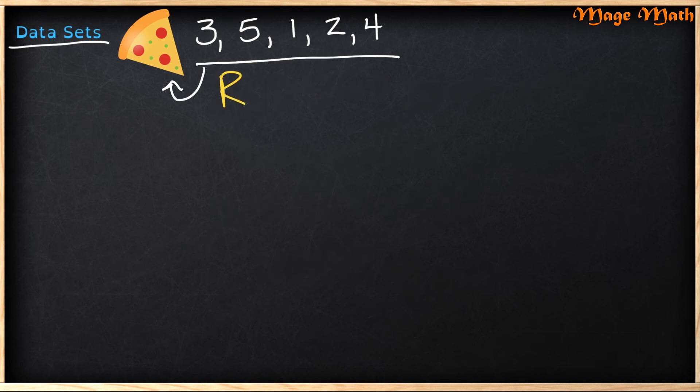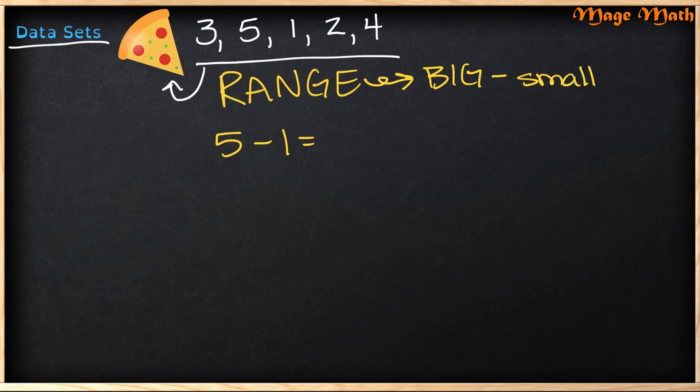The last thing we're going to learn about today is called the range. And this is just when we take the big number, or the biggest number, and we subtract it by the smallest number. So in this case, our largest number here is five, and our smallest number is one. And we know that five minus one equals four. So our range in this case is four. Pretty simple, right?